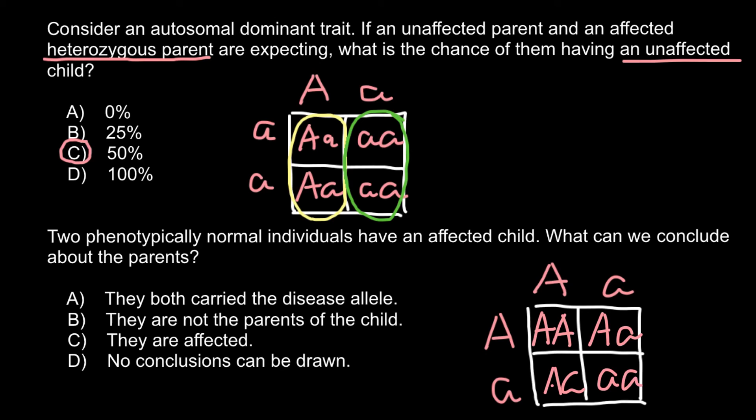But when we have two defective alleles, that means that this genotype would produce the genetic disorder, but the parents would be phenotypically normal. And these three genotypes here also would be phenotypically normal.